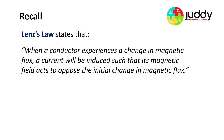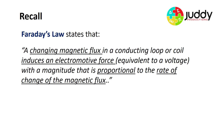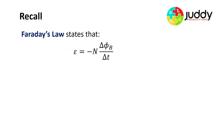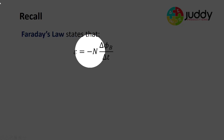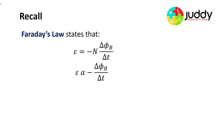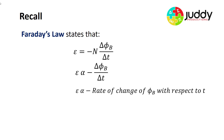This is a very important law with great applications. Faraday's Law states that a changing magnetic flux in a conducting loop or coil induces an electromotive force equivalent to a voltage with a magnitude proportional to the rate of change of the magnetic flux. As an equation, the EMF is equal to the negative n dΦ/dt. Also, the EMF is proportional to the negative change in flux over time, which represents the negative gradient of a Φ versus t graph.